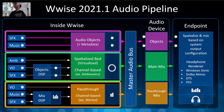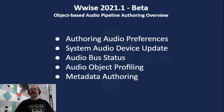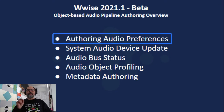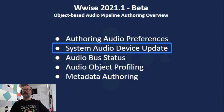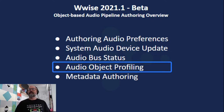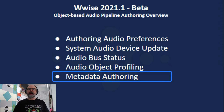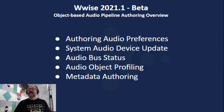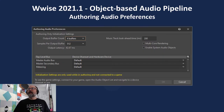The five areas we're going to talk about and go hands-on with are: authoring audio preferences — the preferences you have in Wwise; the system audio device update, which is a cross-platform system audio device; audio bus status, which communicates what a bus is doing and how it's processing sounds; profiling audio objects; and authoring custom metadata.